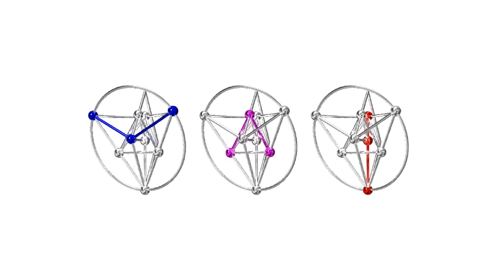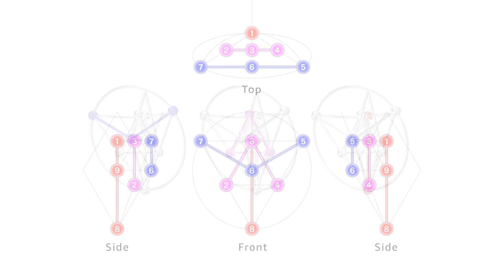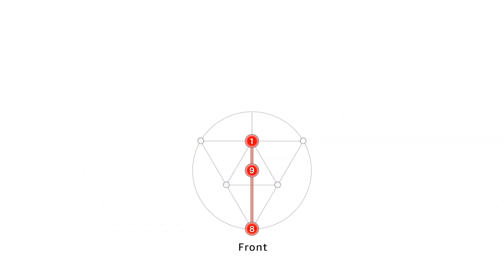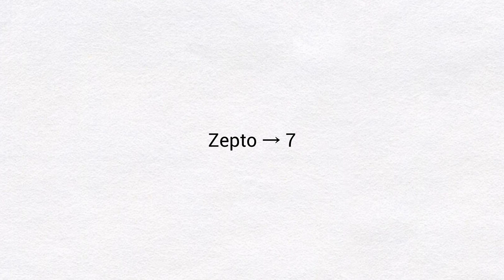The zeptoform has nine points. But when you look at this structure from the front, top, and side, two points are superposed, and thus you can see only seven points. For example, when you look at this structure from the front, points one and nine would be superposed by points three and six. As already discussed, the word 'zepto' indicates seven.